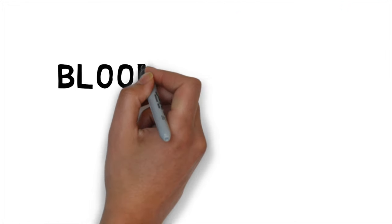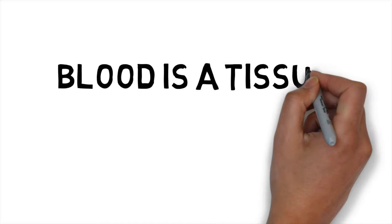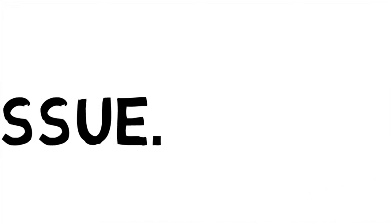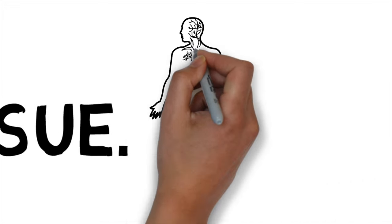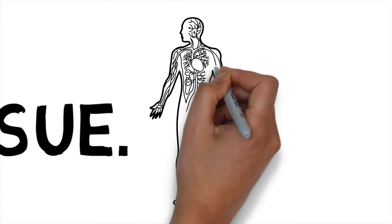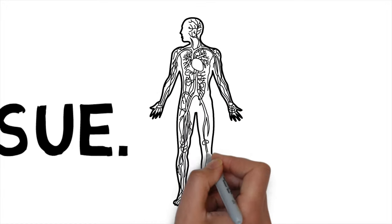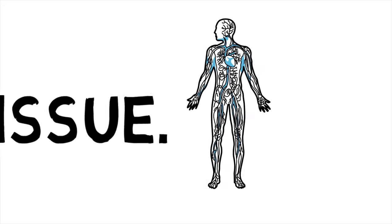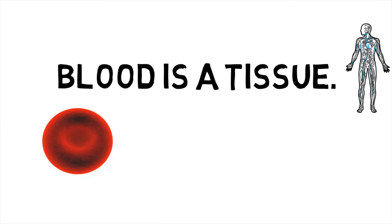First thing you need to know about the blood is that blood is actually a tissue, because the definition of a tissue is a group of cells working together to carry out a function. Obviously the blood is part of the circulatory system, which consists of blood vessels, the blood, and the heart.